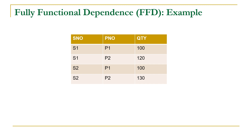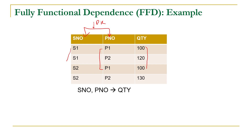Let us consider an example. Here we have a database about shipments having three attributes: S number, P number, and quantity. Supply number and part number are both repeating, as is quantity. The combination of S number and P number is the primary key, and every primary key functionally determines other attributes. So quantity is functional dependent on the combination of S number and P number.